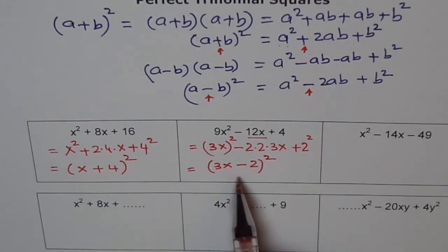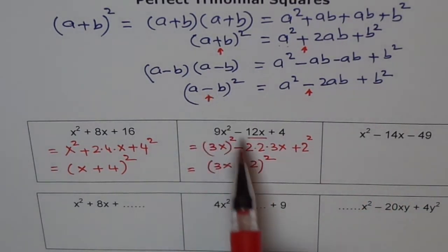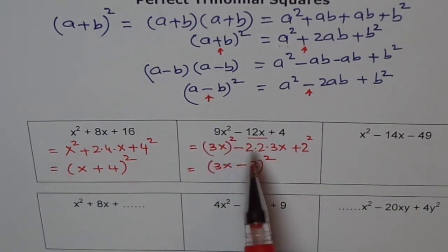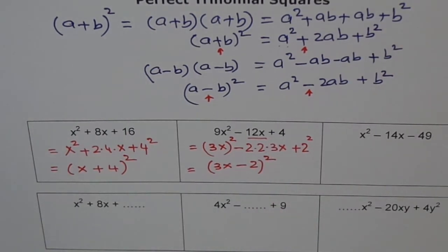So I can write this as a minus b whole square. Minus, because this is minus here this time. So I'll write this as 3x minus 2 whole square. As an exercise, expand it. As I've shown earlier, check whether this trinomial can be factored as a perfect square 3x minus 2 or not.